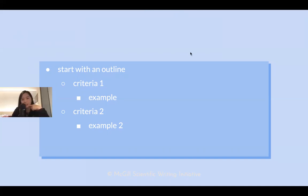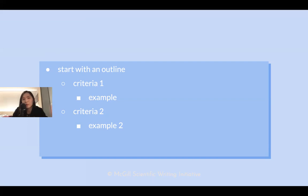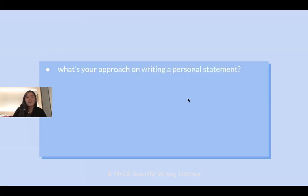This is the outline I made before writing. For each criterion, I listed several examples of what I could include. When actually writing, it's easier to pick and select the most relevant example. You can include many different examples, even overlapping ones, and then while writing, see which best fits each point. That's the approach I'd take before writing the personal statement.